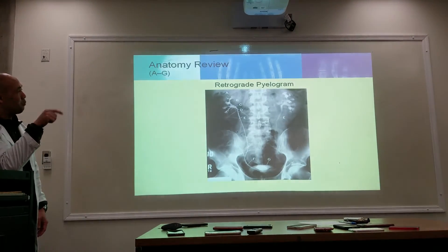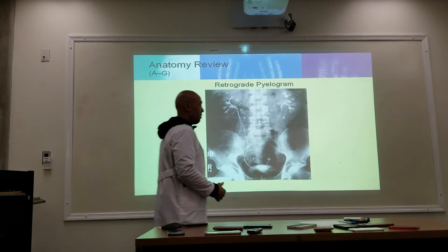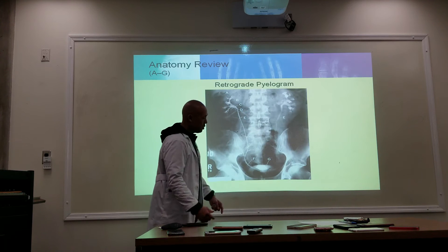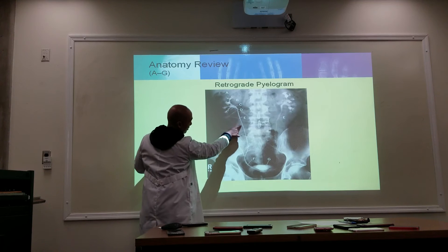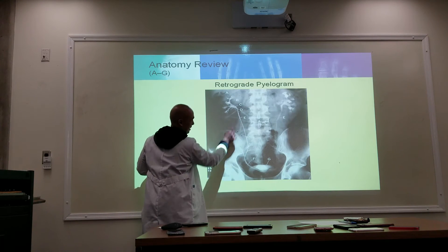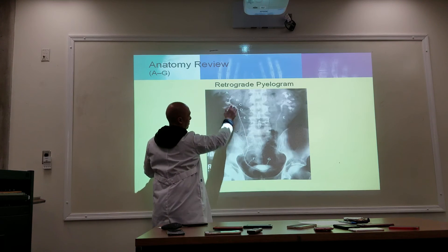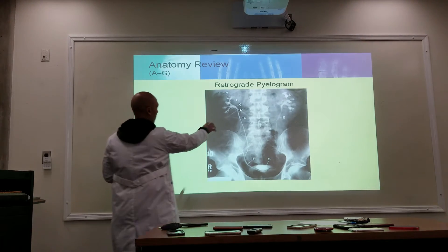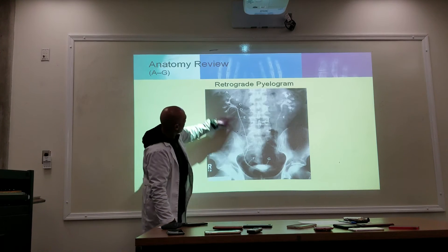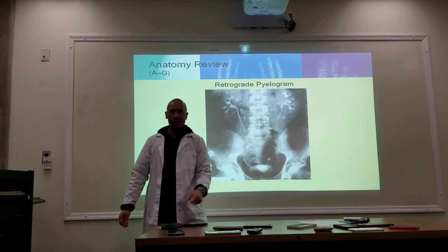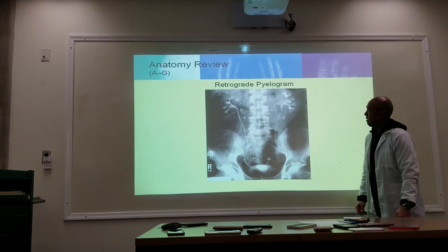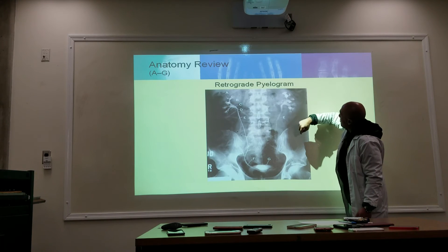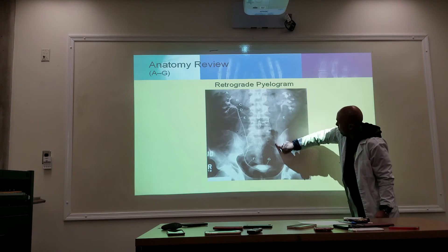A retrograde pyelogram involves retrograde — backflow — filling of the kidneys. A catheter is inserted through the urethra, into the bladder, and up into the ureter and renal pelvis. Contrast is injected through the catheter, filling up the entire urinary system from below. On the image, you can see the minor calyces, major calyces, renal pelvis, and ureter. The catheter on one side shows retrograde filling, while the other side shows normal filling.